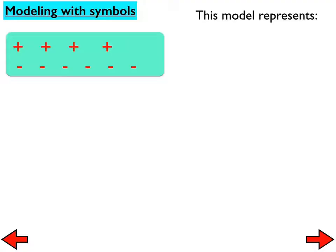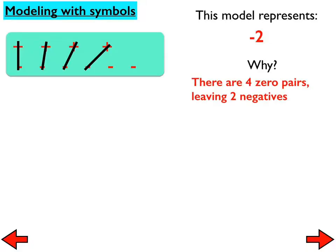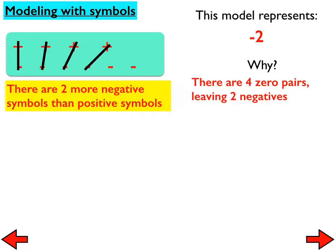Negative one? I think it represents negative two. How many zero pairs do you see in that picture? Four. Four zero pairs. They're called a zero pair for a reason — the sum of those two items makes zero. We can clearly see we have two negatives left over. So there are four zero pairs leaving two negatives. Another way of looking at it is there are two more negative symbols than positive symbols.